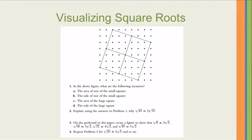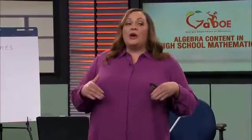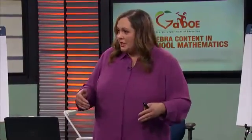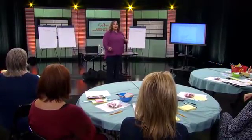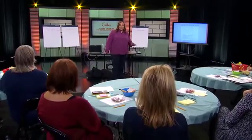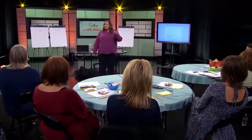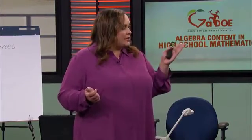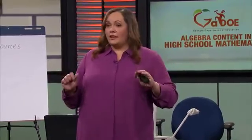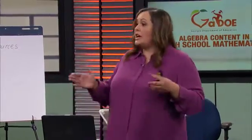I would like for us now to apply that standard to the task called Visualizing Square Roots. Visualizing Square Roots is a wonderful task that allows students to understand why we rewrite radicals the way we do. This is the task that addresses the concept. Students visually see what simplifying a radical means — why the square root of 40 is 2 square roots of 10. This is not just an algebraic way; this is not the algorithm our students will have to follow.